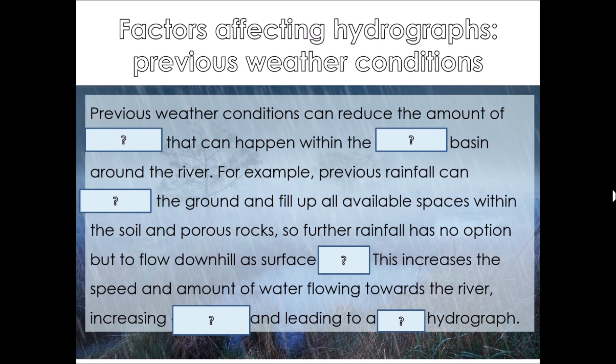Your job now is to spend a little bit of time explaining each of those factors. You'll notice in your booklet there's a table in which you can do this. We're going to go through one of them together, and then you'll spend some time after this video explaining the others. So here we've got previous weather conditions as an example. Pause this video now and see if you can write this out by filling in those gaps — I haven't given you the words, I want to challenge you. Put those words in pencil if you're unsure, and once you've given it a go, unpause and we'll go through the answers together.